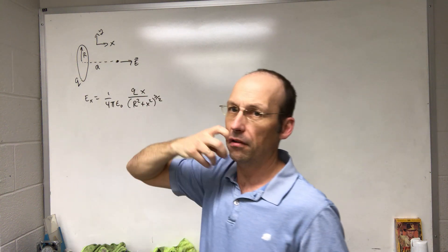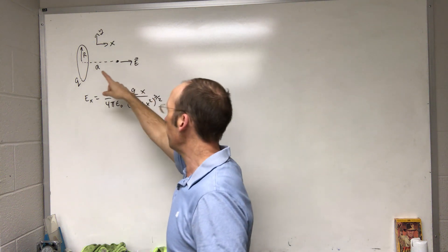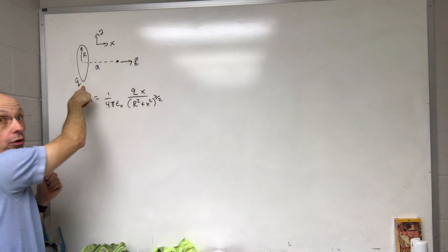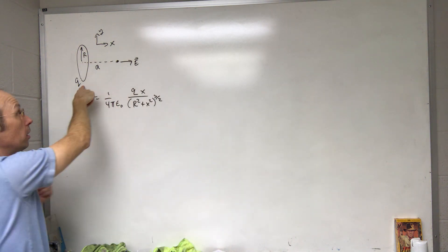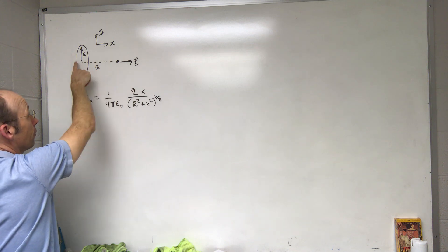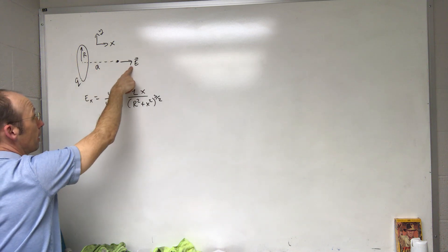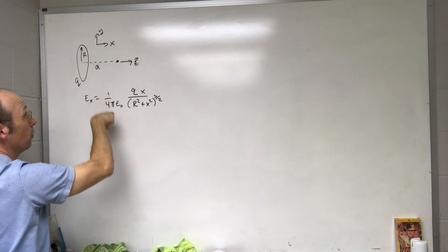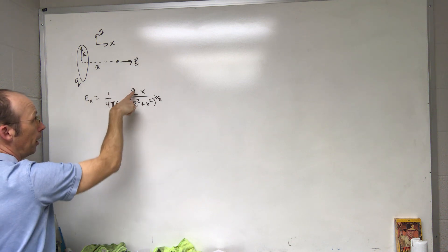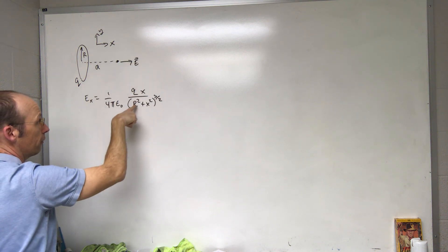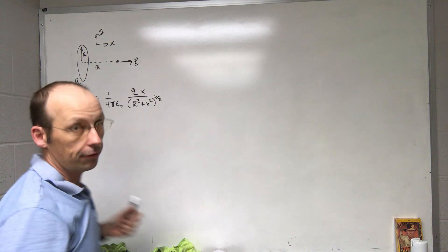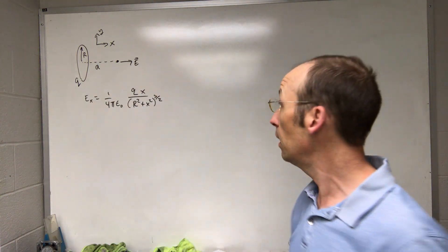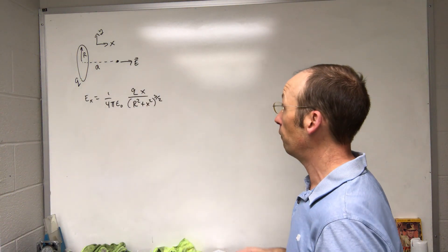You would find this by integrating — it's not too hard — but if I have a charge ring of radius R and a total charge Q, then if I'm along the axis of that ring, the electric field is pointing away from the ring and the magnitude in the x-direction is: (1/4πε₀) · Qx / (R² + x²)^(3/2).